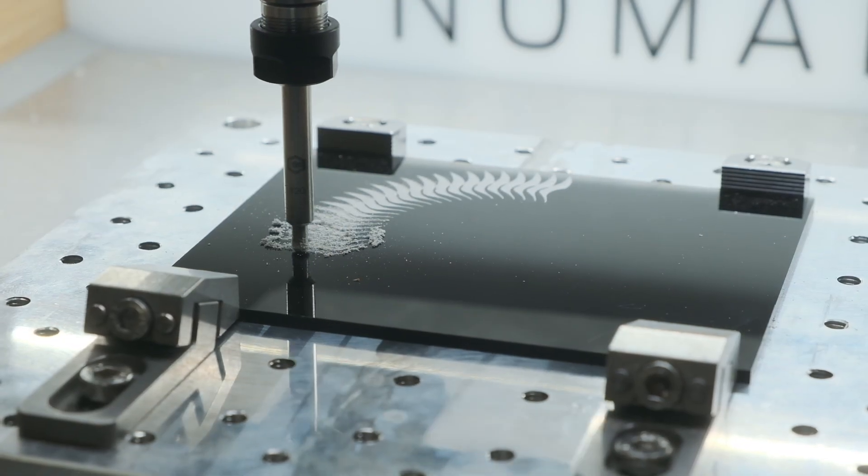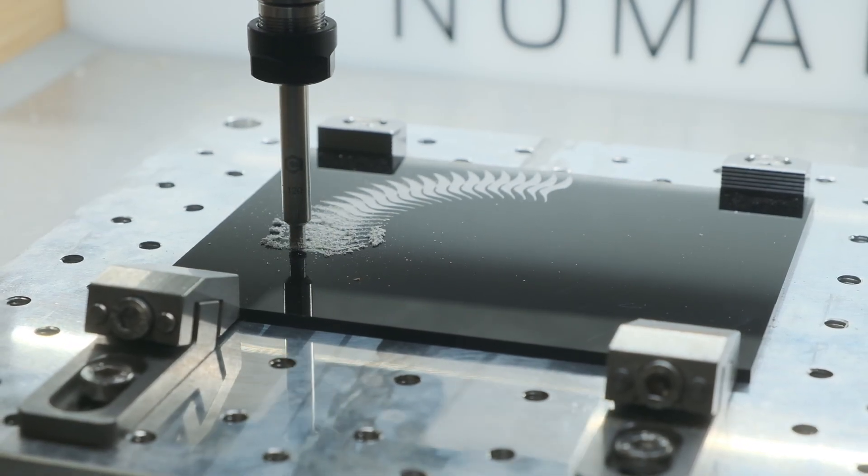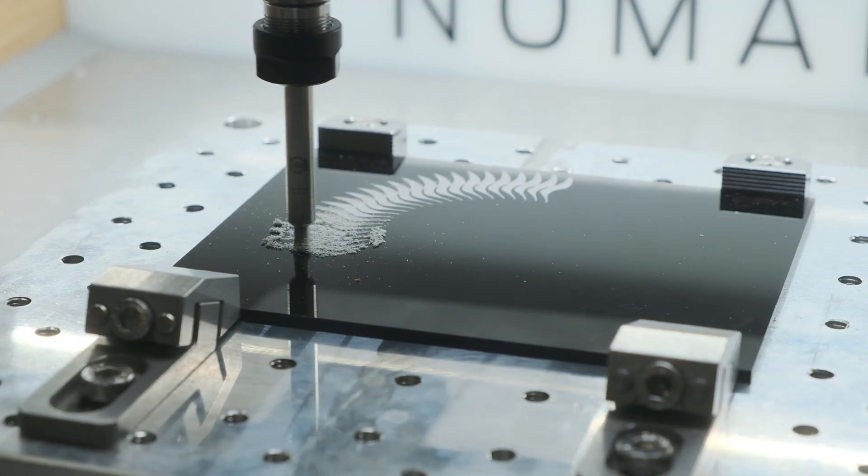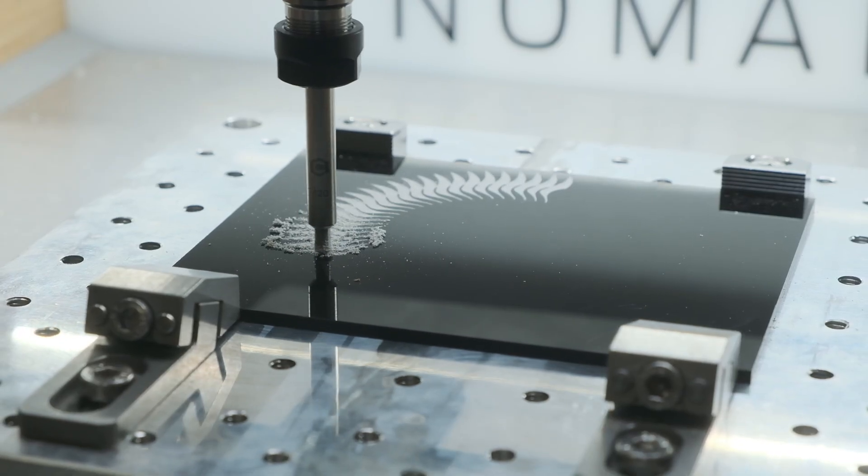You can use a drag engraver on traditionally machinable materials, like metals or plastics, but also on materials you can't machine, like glass.